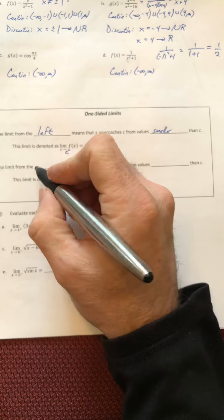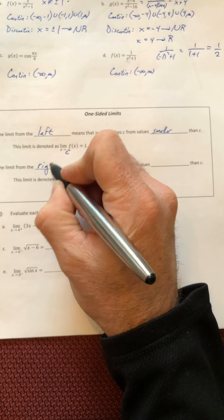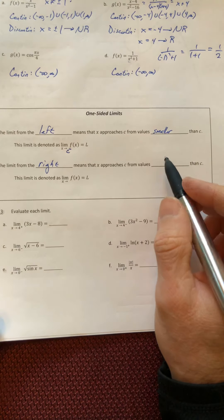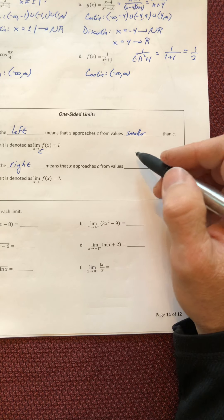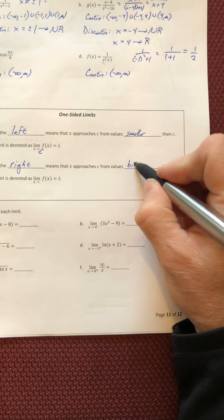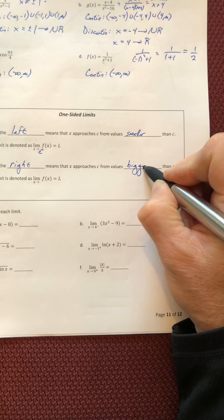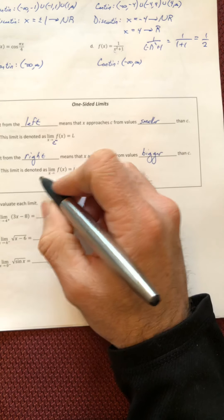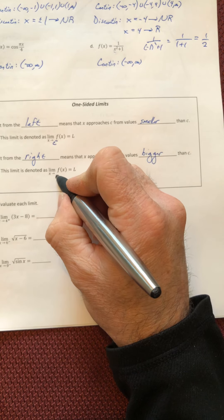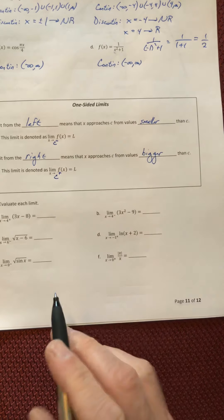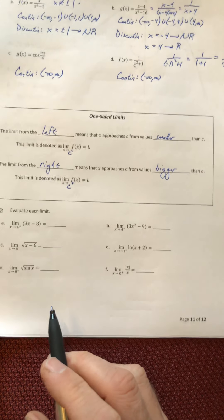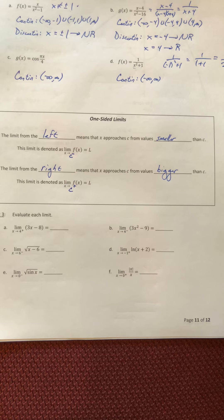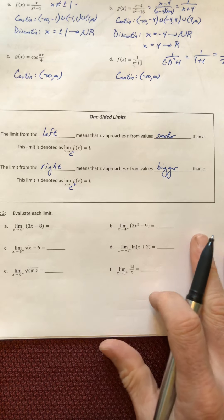Now the limit from the right, you can probably guess what goes in the blanks. It means that you're approaching x, x approaches C from values bigger than C. And then the limit is denoted as x approaches C with a positive. Alright, so let's go ahead and try a few of these out.